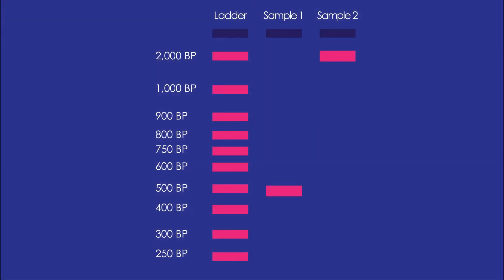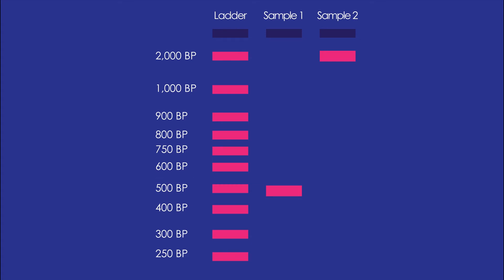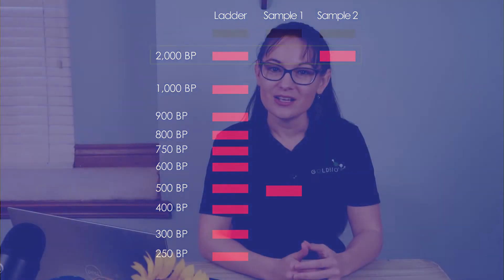So if we compare sample one, which is in lane two, to the ladder, we see that sample one is about 500 base pairs. But if we compare sample two with our ladder, we see that sample two is roughly 2,000 base pairs.